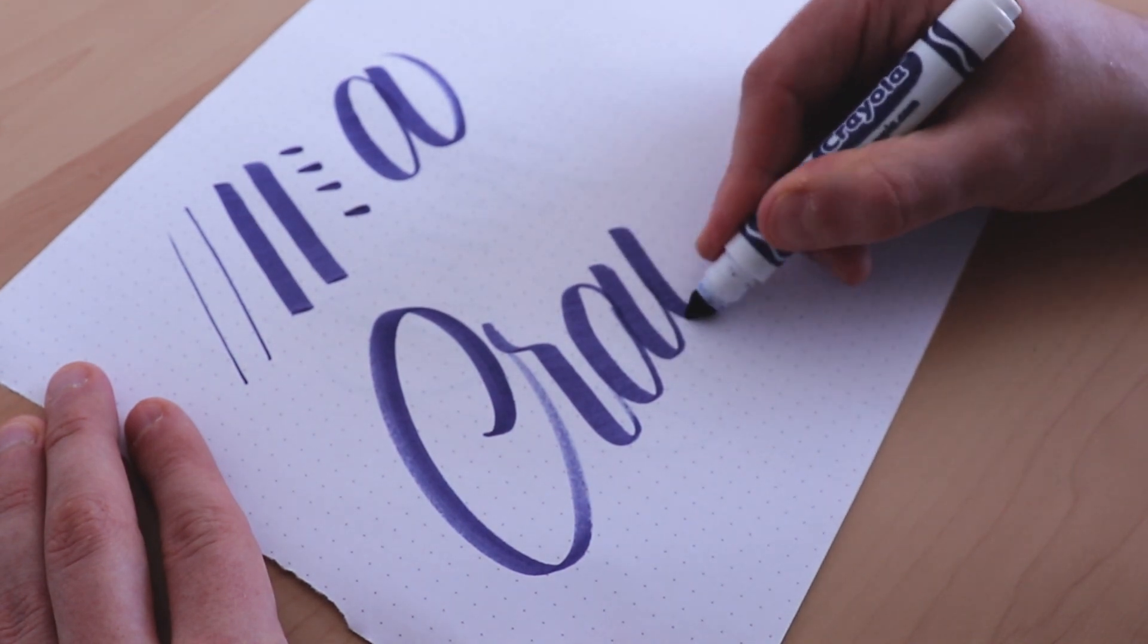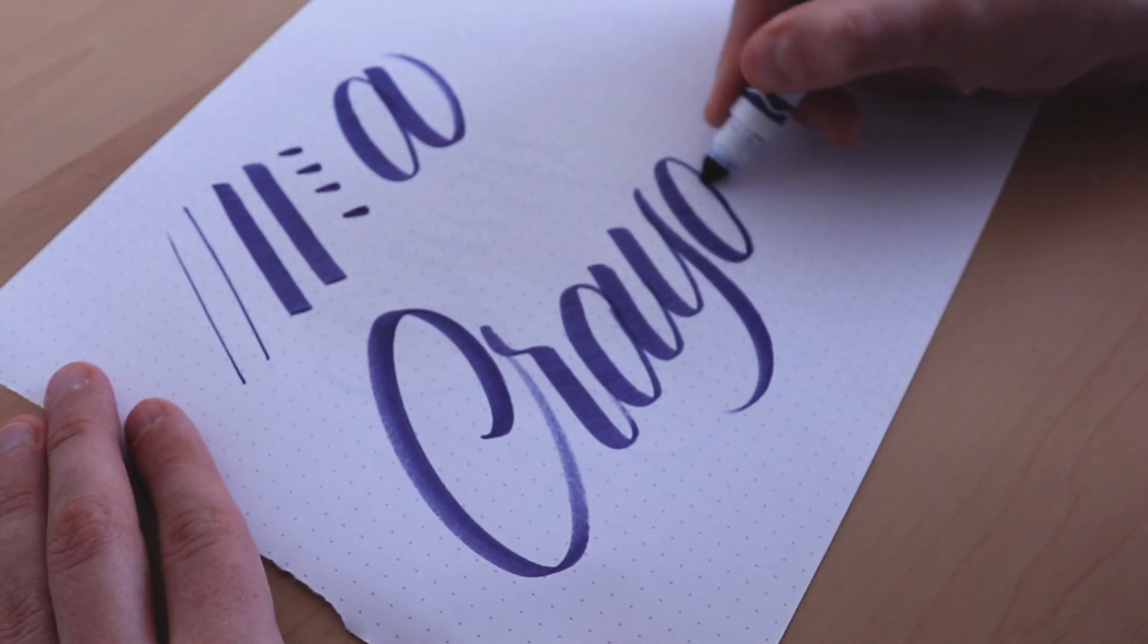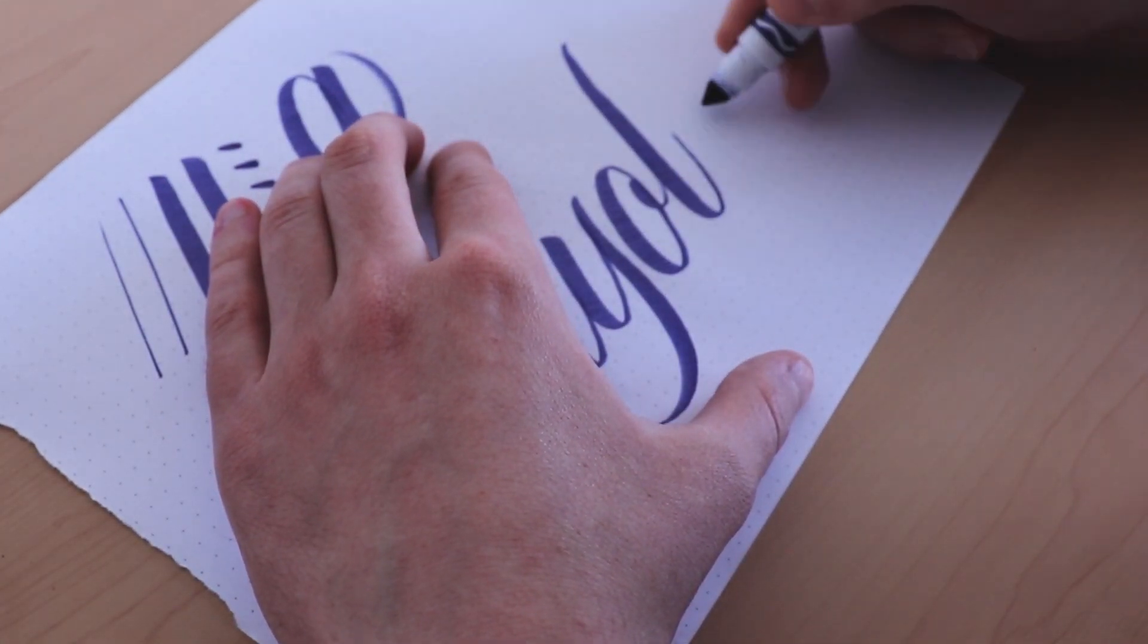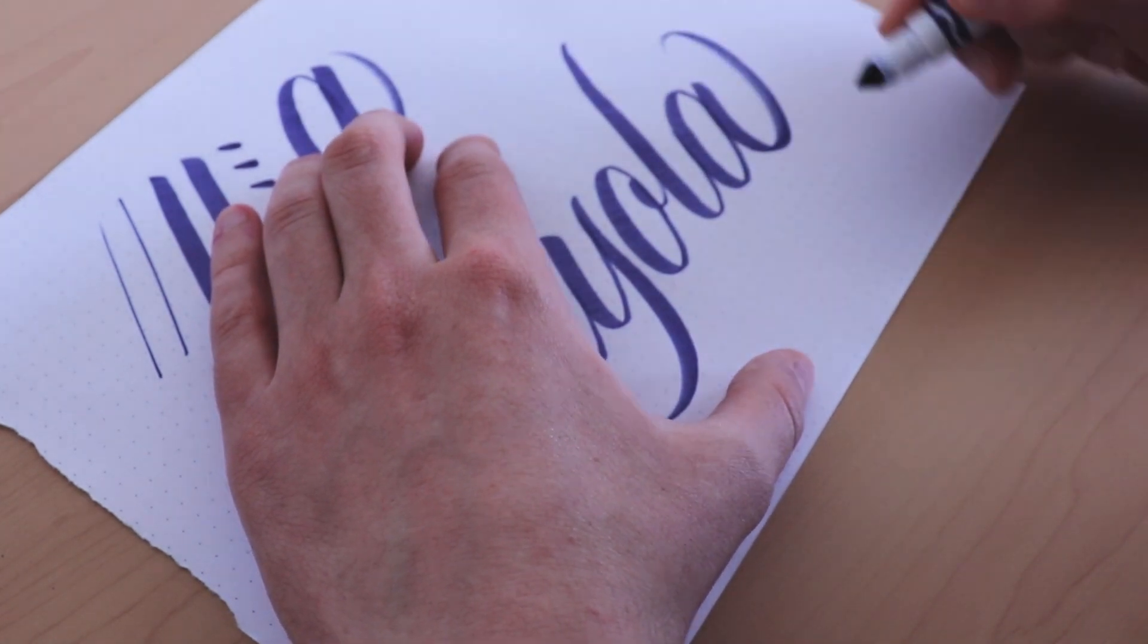The Crayola Marker is an exception for this list since it's not technically a brush pen. It has a semi-firm broad tip that you can bend if you add enough pressure. The best result is however achieved if you combine pressure with a lower angle of the pen. Too much pressure as you write can actually decrease the control of your movements.